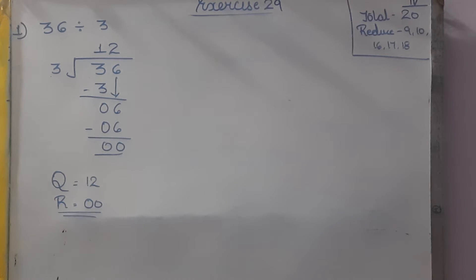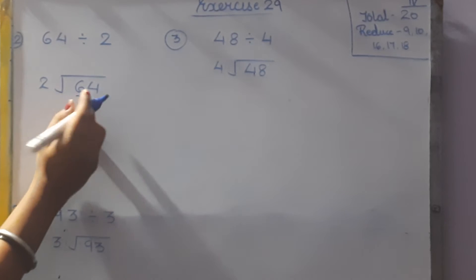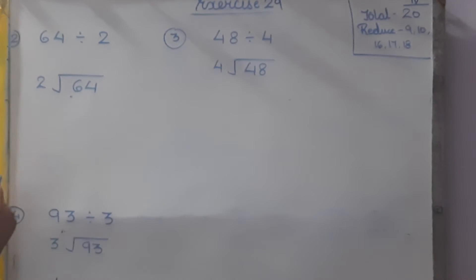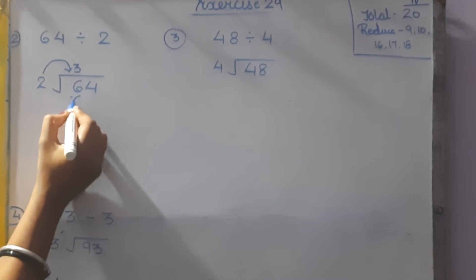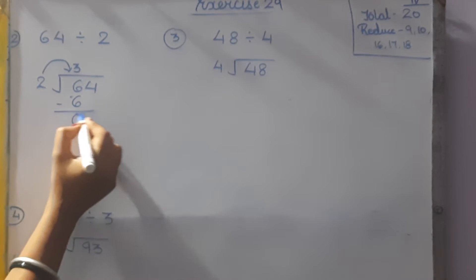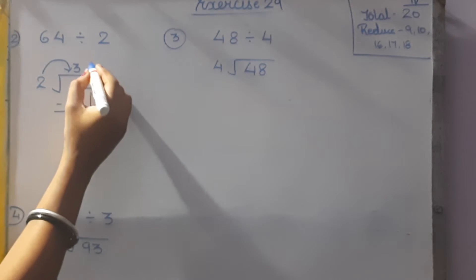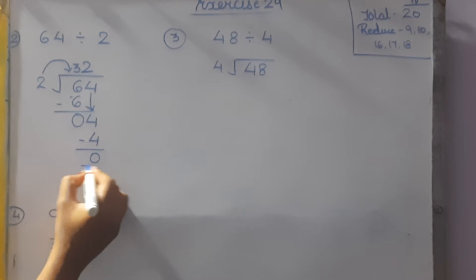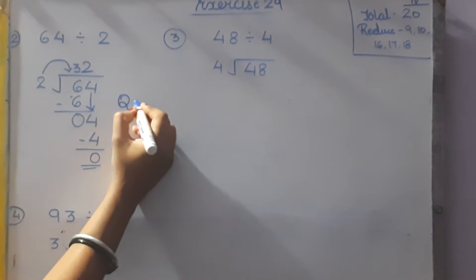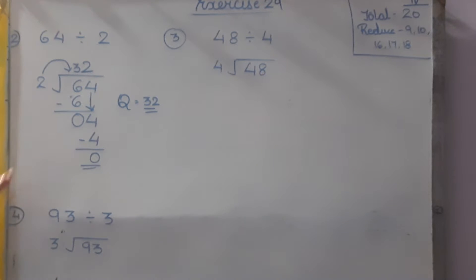Next, 64 divided by 2. The first number is 6. In the table of 2, how many times does 6 come? 2 threes are 6, so 6 minus 6 is 0. Bring down 4. 2 twos are 4, and 4 minus 4 is 0. So the quotient is 32 and the remainder is 0.